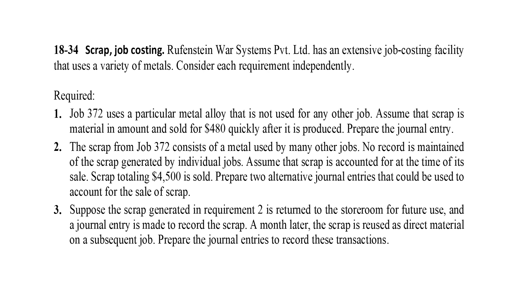Exercise 18-34. Job 372 uses a particular metal; assume that the scrap of the material is sold for $480. Prepare the journal entry. Then for another scenario, job 372 consists of a metal used by many other jobs, and the scrap is accounted for at the time of its sale totaling $4,500.